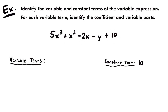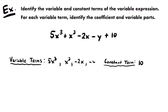Since we've identified the constant term, all the other terms must be variable terms — they all involve variables of some kind. This variable expression has 5 terms total, so with 1 constant term, there must be 4 variable terms. Those would be: 5x cubed, x squared, negative 2x, and negative y. Remember to include those negative signs with those variable terms — those negatives are associated with the term they are in front of.